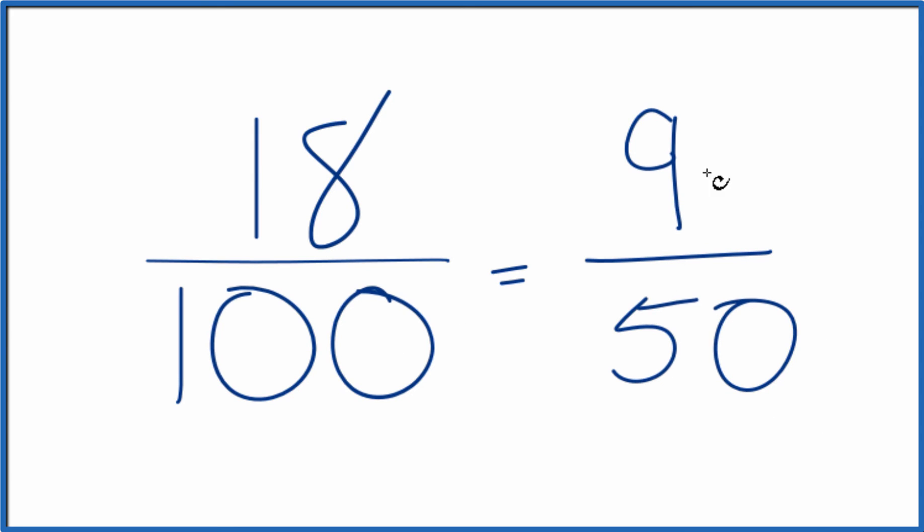And both 18 over 100 and 9 over 50, they're equal to the same thing, the same decimal value. They're equivalent fractions.